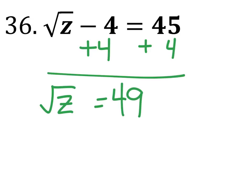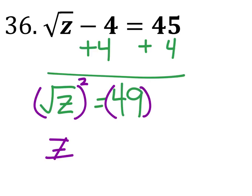So we want just z by itself. We're going to have to square this action right here and square this one too. So 49 squared is 2,401.